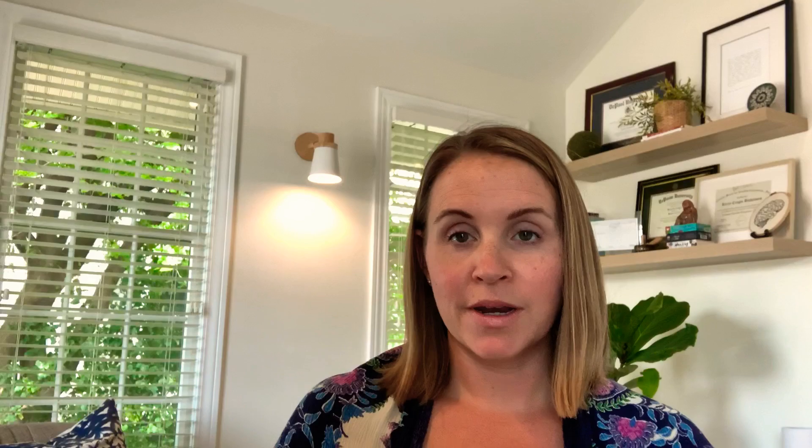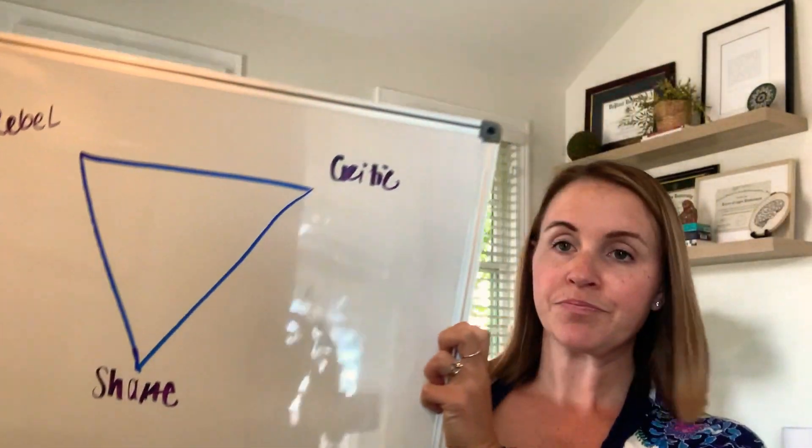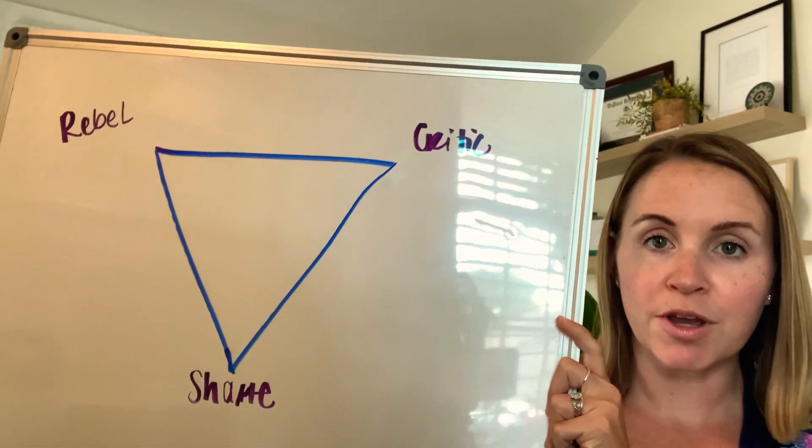So if you have a piece of paper or a journal, go ahead and get it out and create an upside down triangle. Make it as big or as little as you want, doesn't matter. And I'm going to show you a little bit on here how we talk through this model.